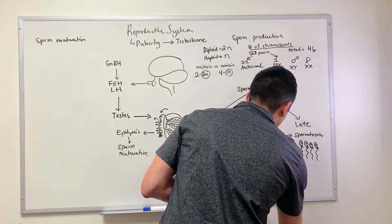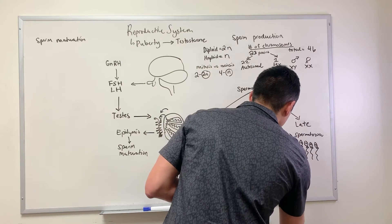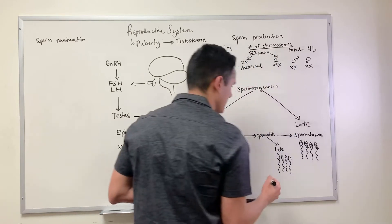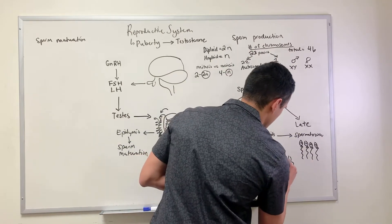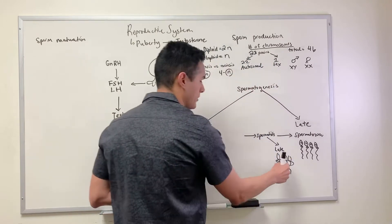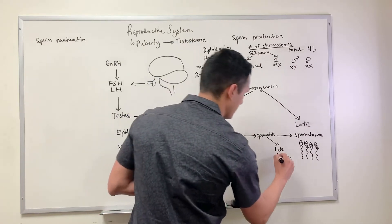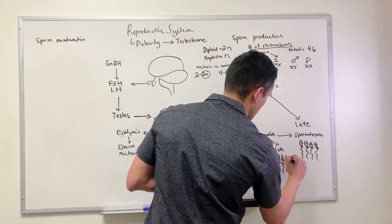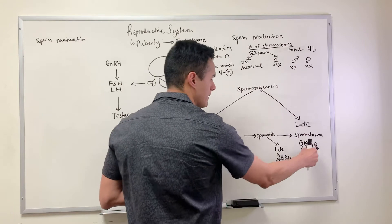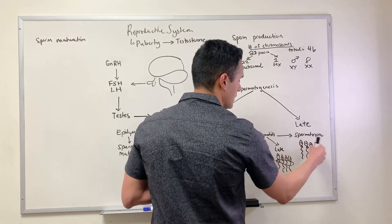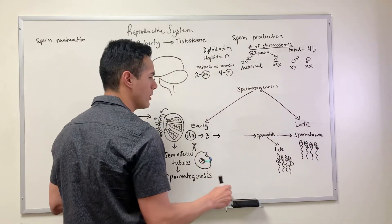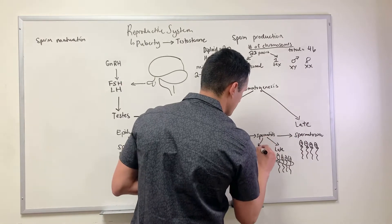Late spermatids develop into spermatozoa. The difference between the two is that we still have our four haploid gametes here, but the difference is they're all connected at this point which is known as the cytoplasmic bridge.